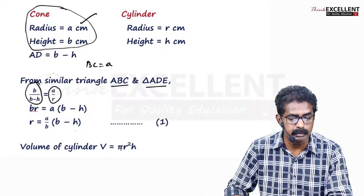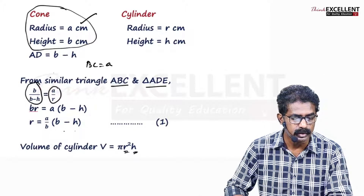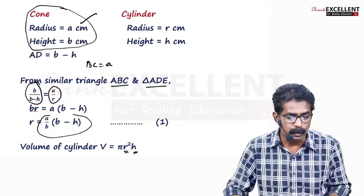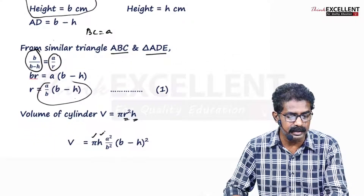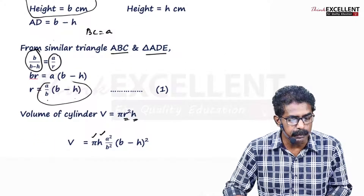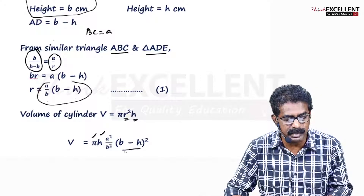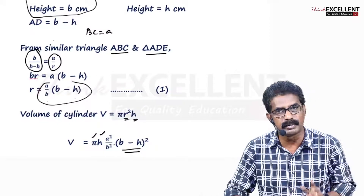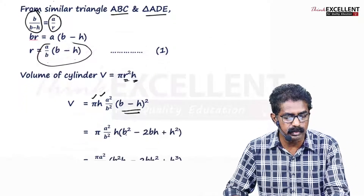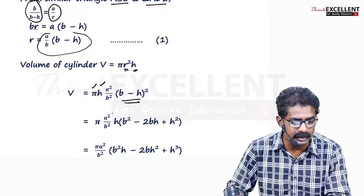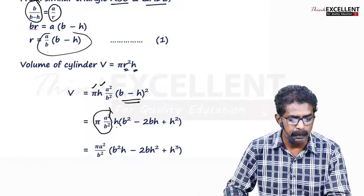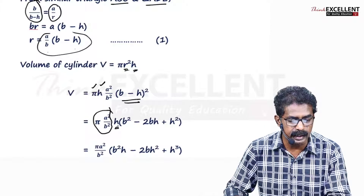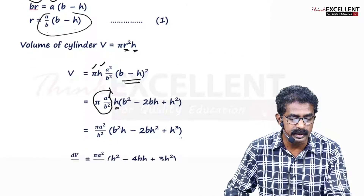Volume of the cylinder is π R² H, with two variables R and H. Substitute the R value. Since we need R squared, we get V = π H · (A²/B²)(B minus H)². Expand (B minus H)² as B² minus 2BH plus H², then multiply term by term to get an equation in H alone: V = (π A²/B²)(B²H minus 2BH² plus H³).